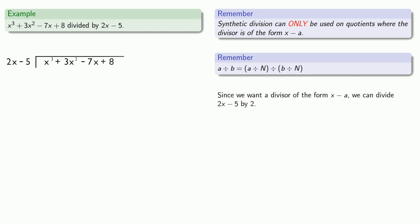Since we want a divisor of the form x minus a, we can divide 2x minus 5 by 2. But that will require that we divide both dividend and divisor by 2.